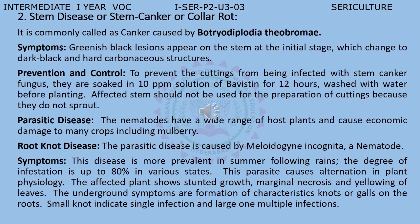Regarding Botryodiplodia theobromae: symptoms are greenish-black lesions appearing on the stem at the initial stage, which change to dark black and hard carbonaceous structures. For prevention and control, to protect cuttings from being infected with stem canker fungus, they are soaked in a 10 ppm solution of Bavistin for 12 hours and washed with water before planting. Affected stems should not be used for preparation of cuttings because they do not sprout.